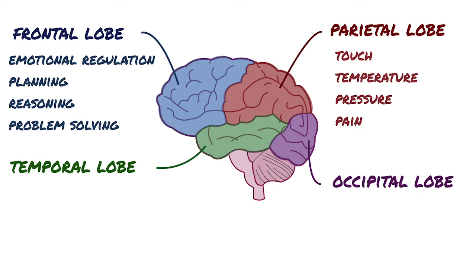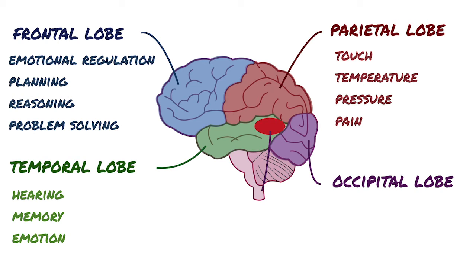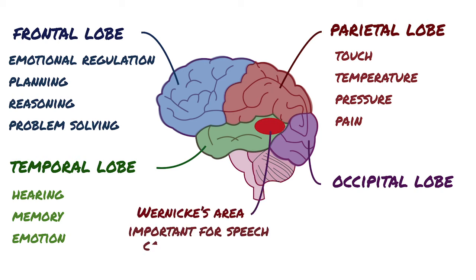The temporal lobe is associated with hearing, memory, emotion, and some aspects of language. The auditory cortex, the main area responsible for processing auditory information, is located within the temporal lobe. Wernicke's area, important for speech comprehension, is also located here.